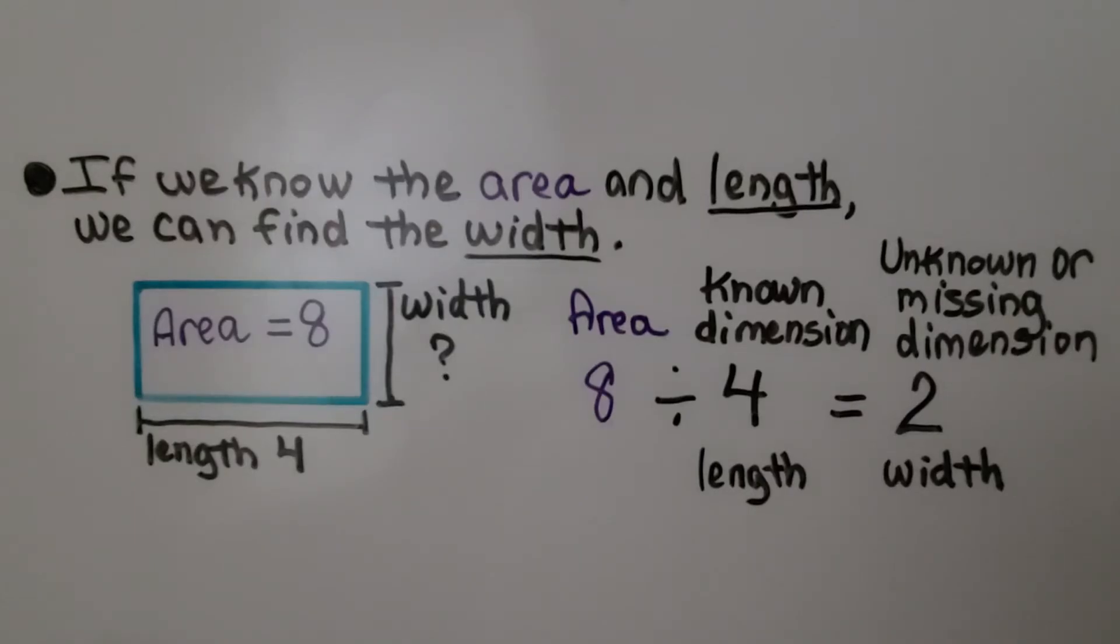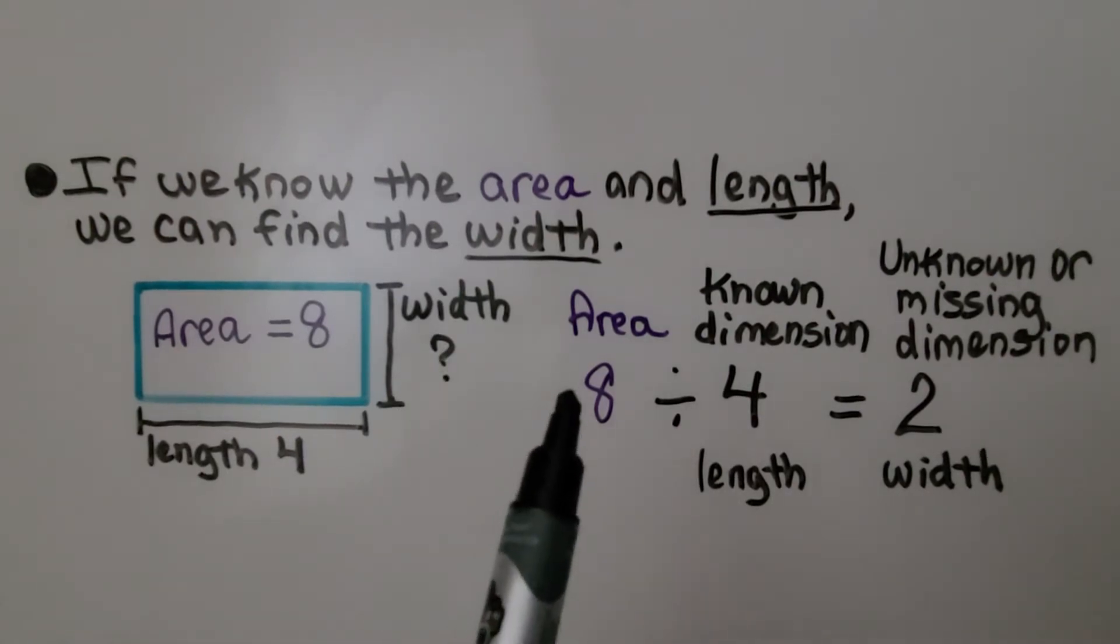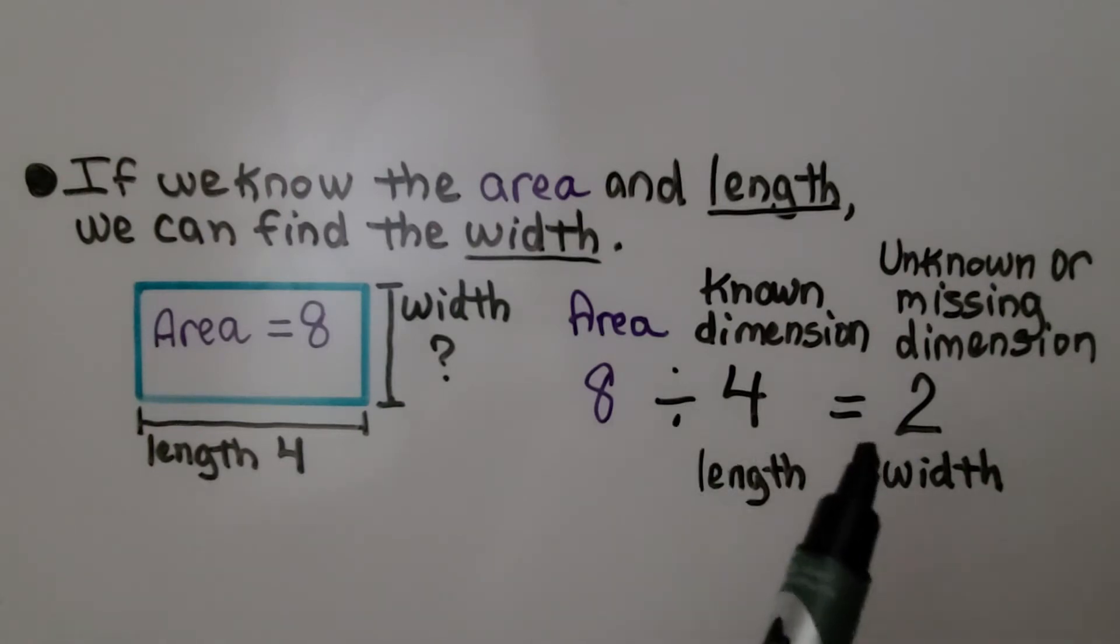If we know the area and the length, we can find the width. We divide the area by the known measure, and the quotient is going to equal the missing measure. 8 divided by 4 is equal to 2. We found the width.